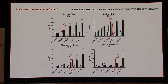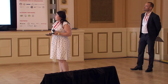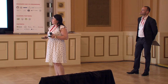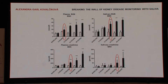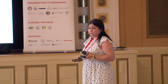Using different animal models, we firstly described detailed dynamics of changes of salivary creatinine and urea during the development of various types of kidney disease. We found out that salivary creatinine and urea increased during the development of kidney disease and they copied their plasma concentration.